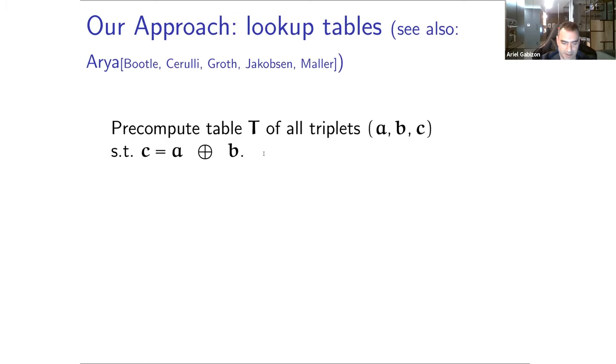The idea is instead of expressing the operations as constraints in your native field, which inevitably will be expensive when your field is prime and your operations are bitwise, simply sort of precompute a lookup table. For example, a lookup table of all field elements triples A, B, C, so that when you look at their bit representations, they're all eight bit elements and C is equal to the bitwise XOR of A and B.